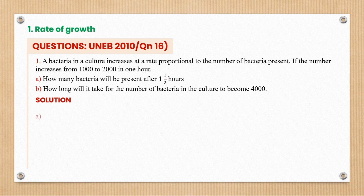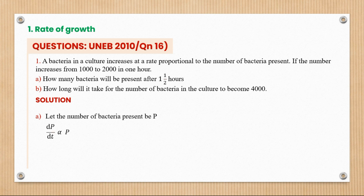We let P represent the number of bacteria present. Since there's an increase, the k value shall be positive — if there is a decrease, k shall be negative. So dp/dt is directly proportional to the number of bacteria present. Converting the proportionality sign to an equals sign, we introduce constant k, giving dp/dt = kP. Because we're dealing with rate of increase, k is positive.